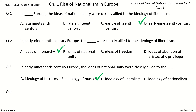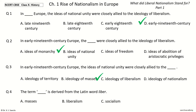Question 4. The term dash is derived from the Latin word Liber. The options are: masses, liberalism, socialism, democracy. And the answer is liberalism. So, the term liberalism is derived from the Latin word liber.